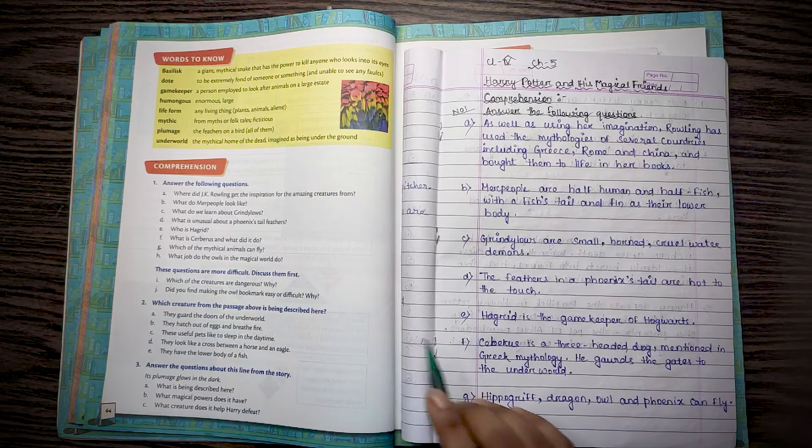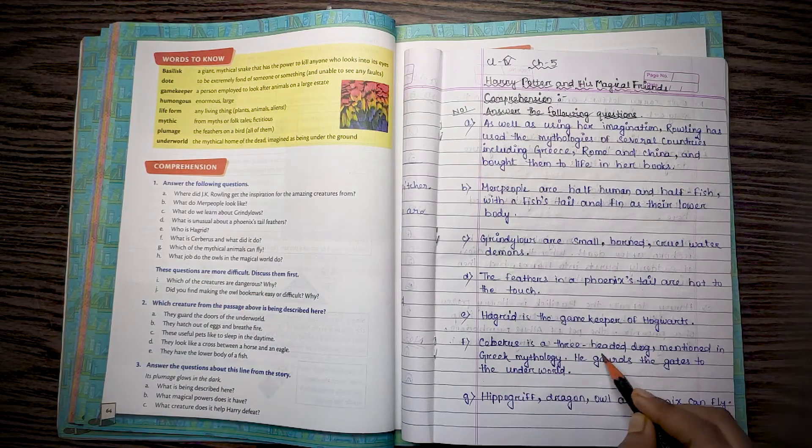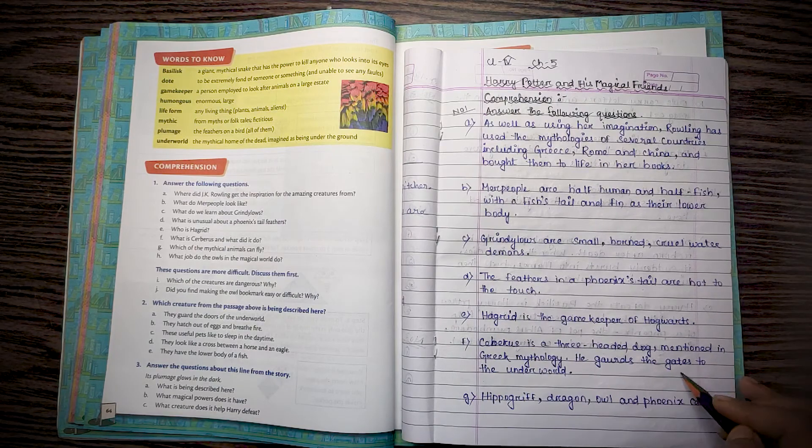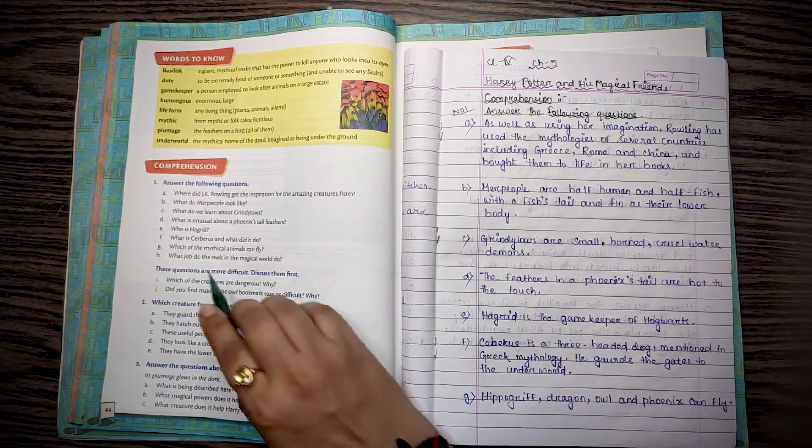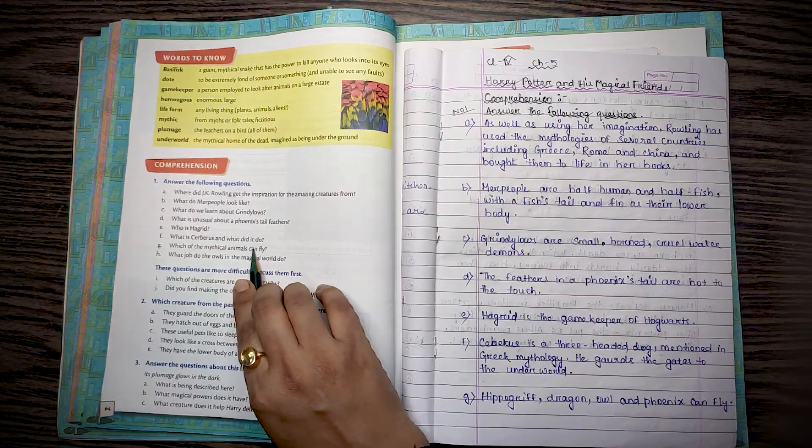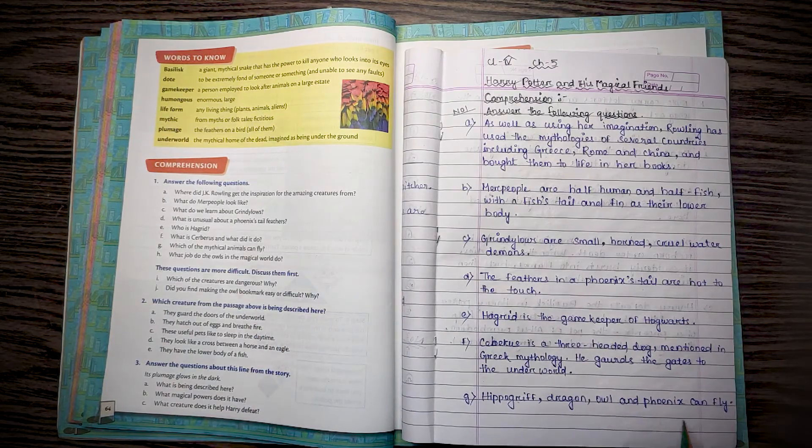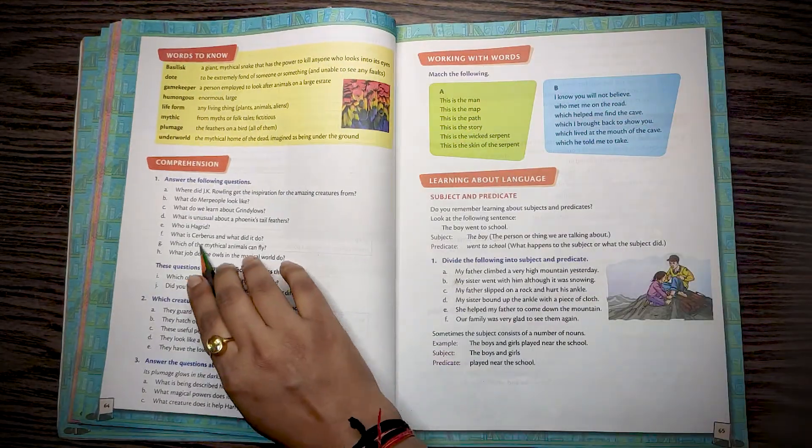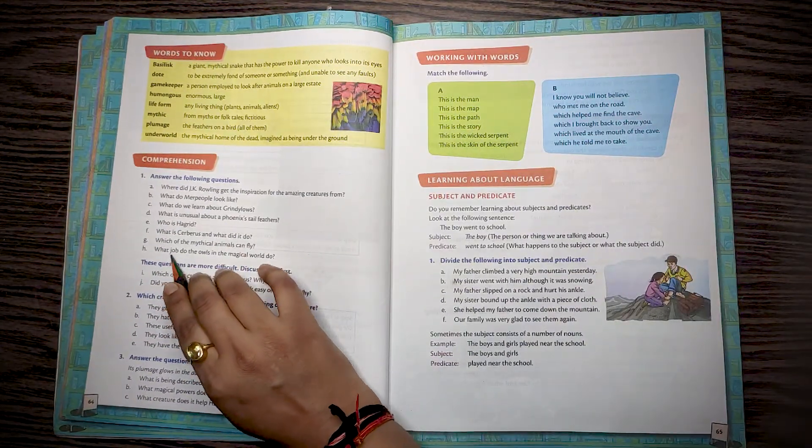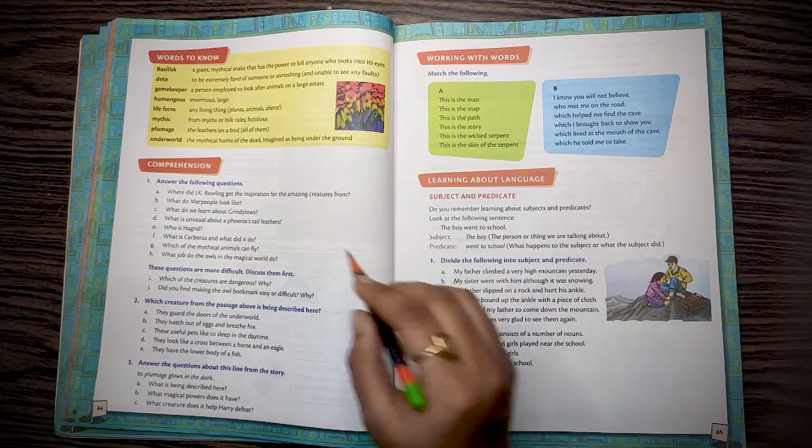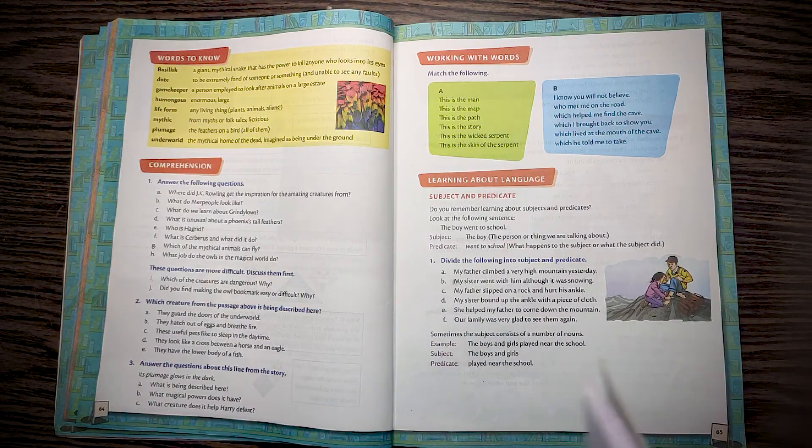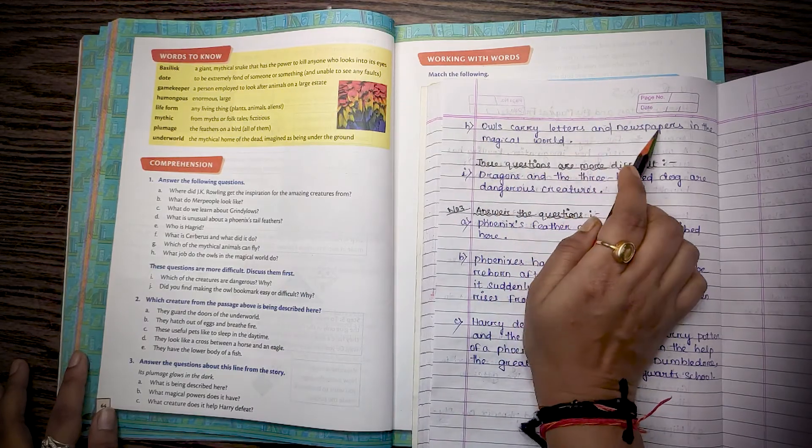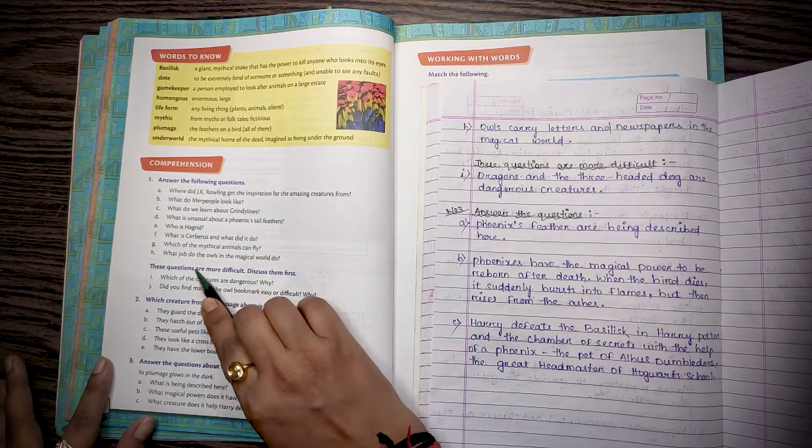Question F: What is Cerebus and what did it do? Cerebus is a three-headed dog mentioned in Greek mythology. He guards the gates of the underworld. Question G: Which of the mythical animals can fly? Hippograff, dragon, owl and phoenix can fly. Question H: What job do the owls in the magical world do? Owls carry letters and newspapers in the magical world.